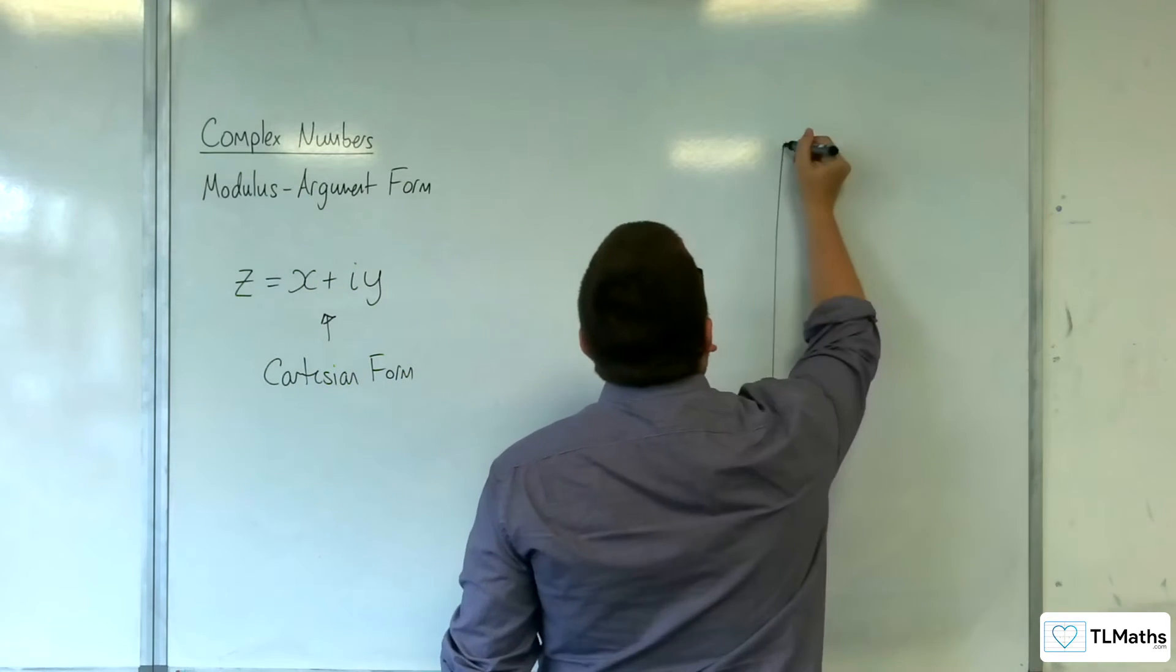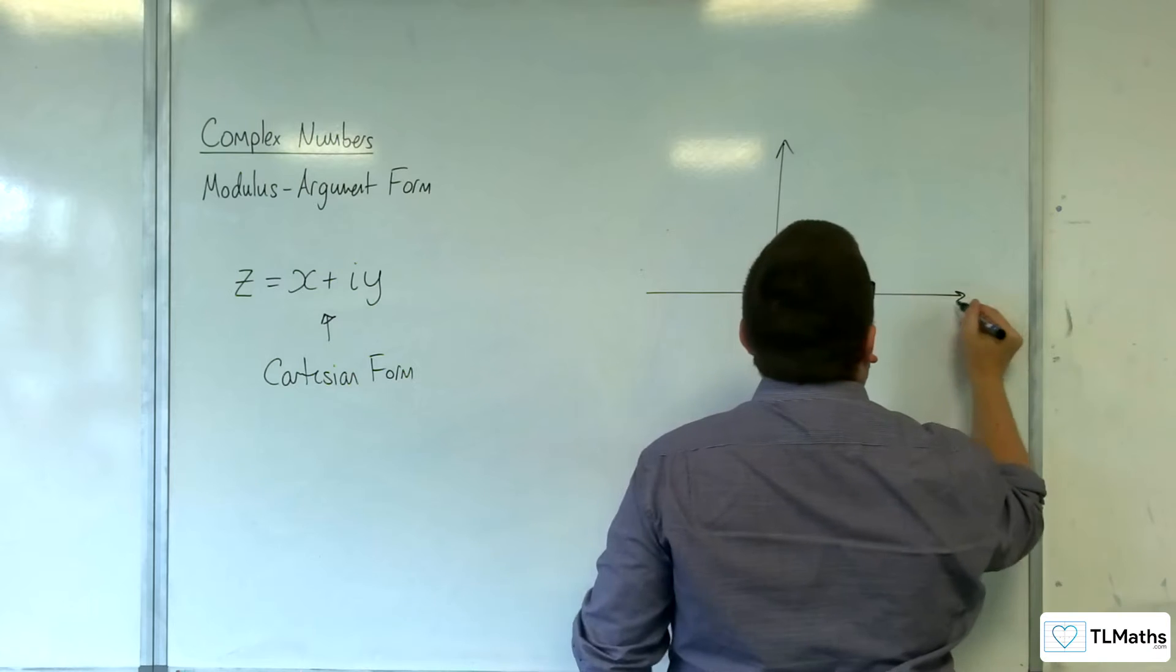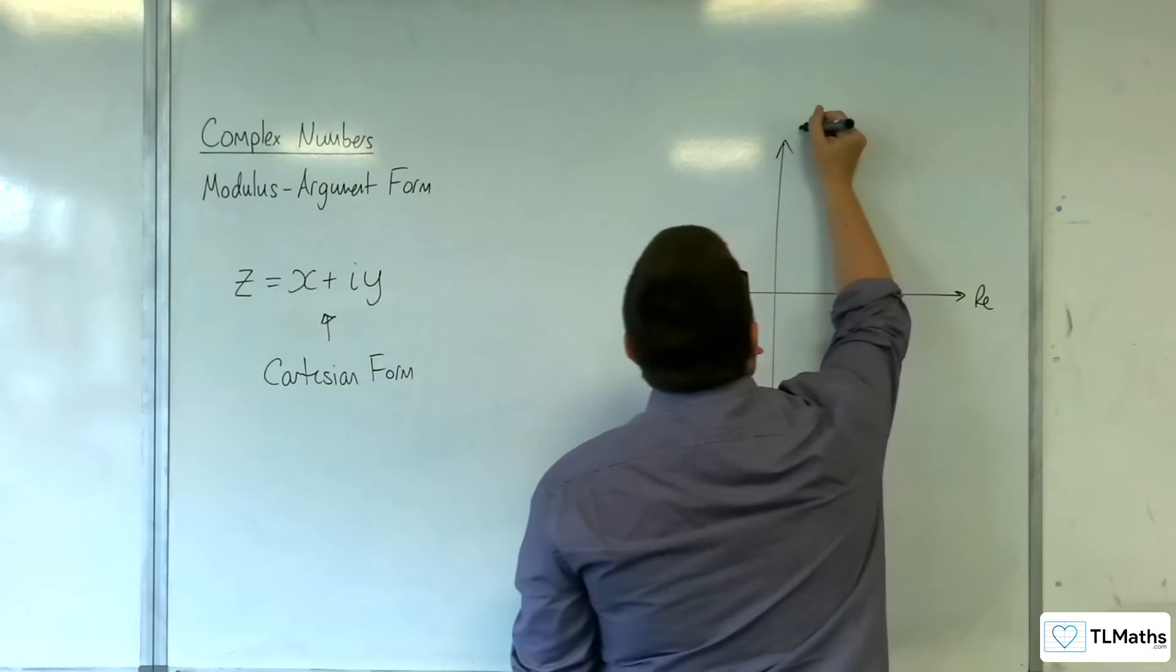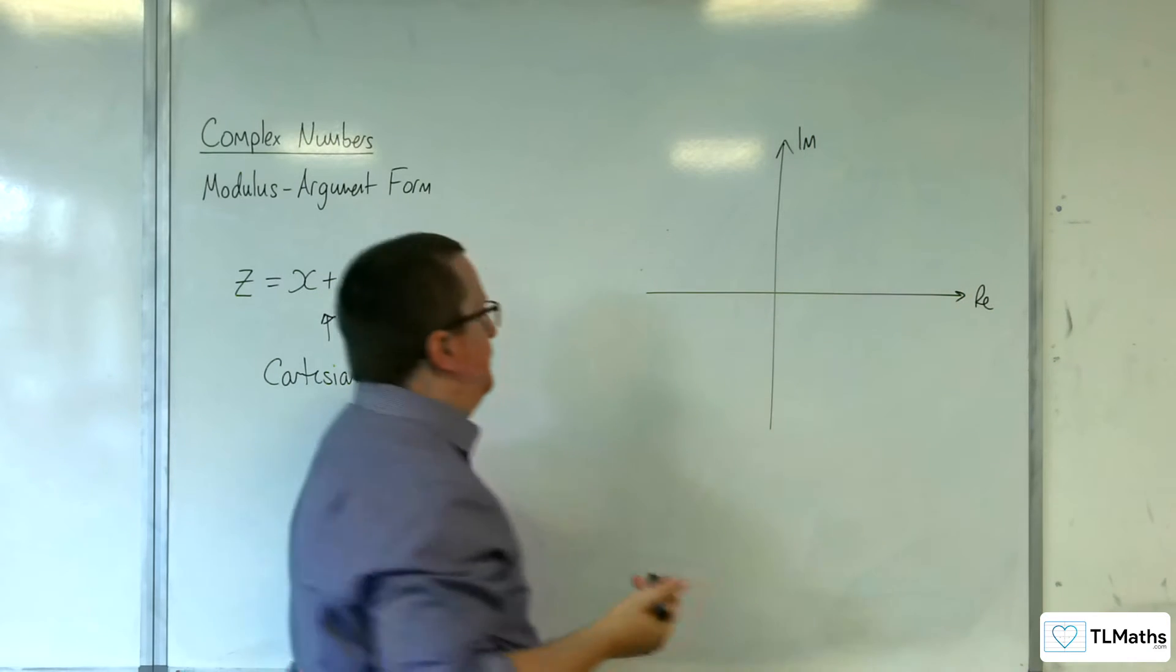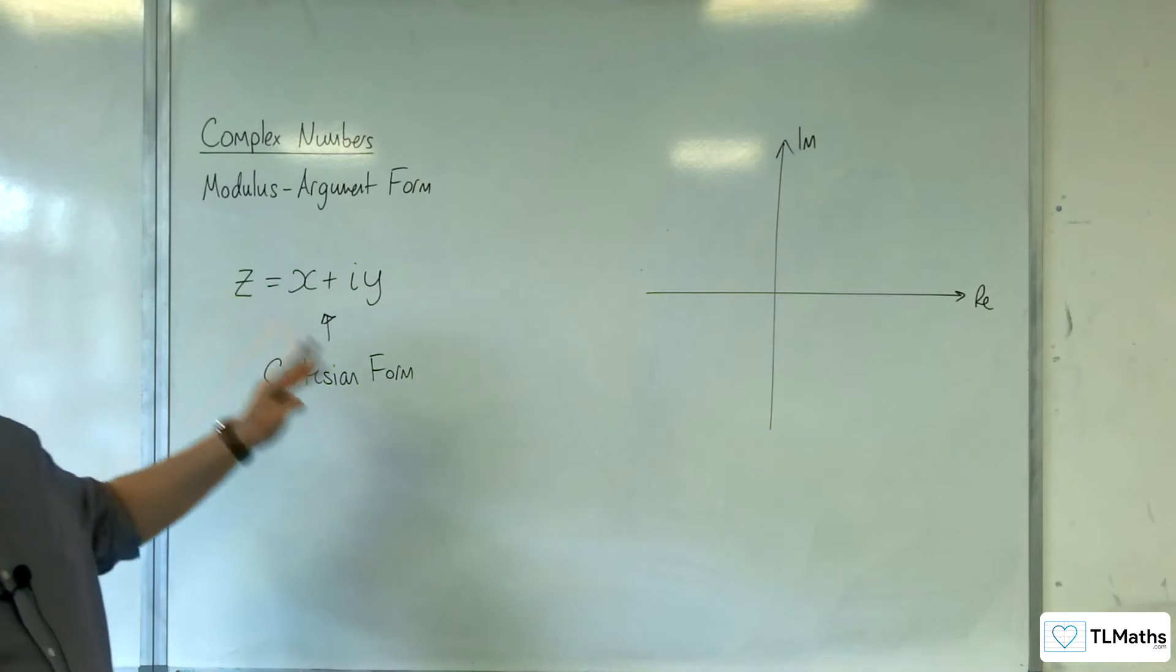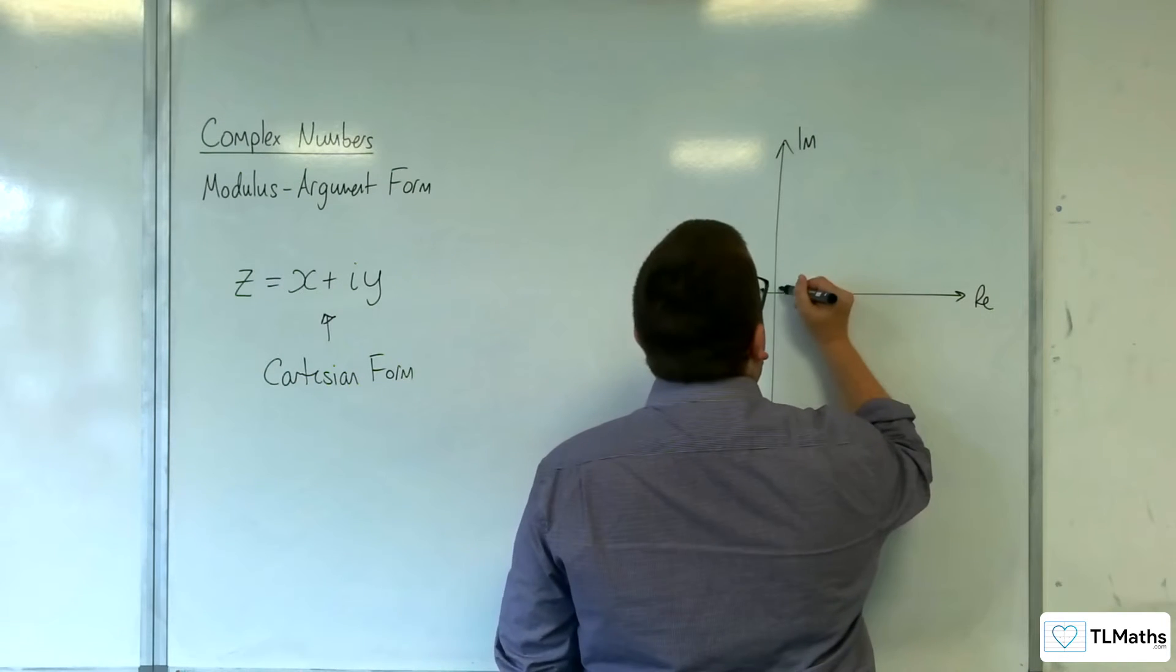So let's visualise. So here's our Argan diagram, and we've got our complex number, Z equals X plus IY.